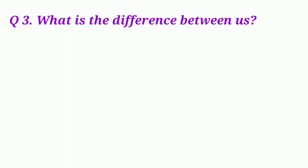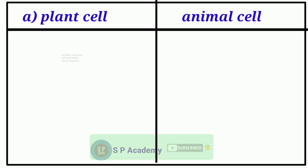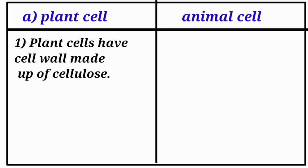Question 3. What is the difference between A. Plant cells and animal cells. Plant cells have cell wall made up of cellulose.